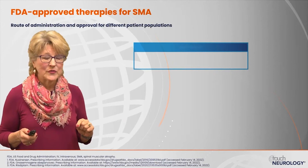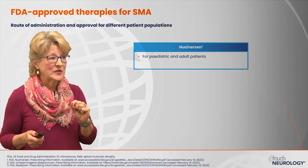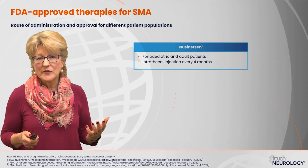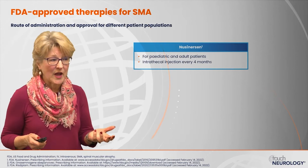Nusinersen was the first agent approved, for all 5q SMA patients — both pediatric and adult — so it's approved across the board. This agent is given via intrathecal injection or lumbar puncture. There is a loading period with doses given on days 1, 15, 30, and 60, and then quarterly — every four months — for life.